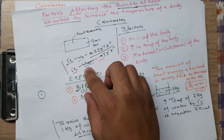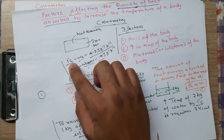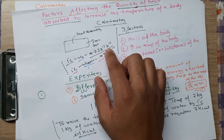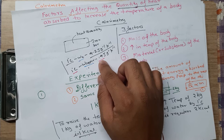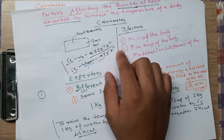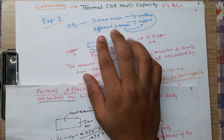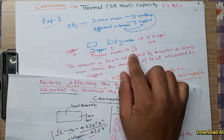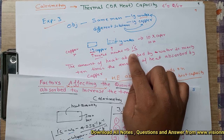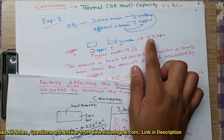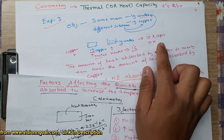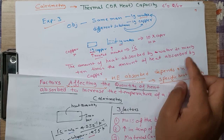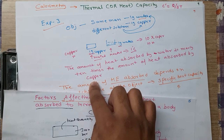In the case of water, it requires 4.2 joule per gram per Kelvin to increase temperature by 1 degree Celsius, whereas copper requires just 0.4 joule per gram per Kelvin. From experiment 3, we can observe that for the same rise of 1 degree Celsius, water absorbs nearly 10 times the amount of heat absorbed by copper.